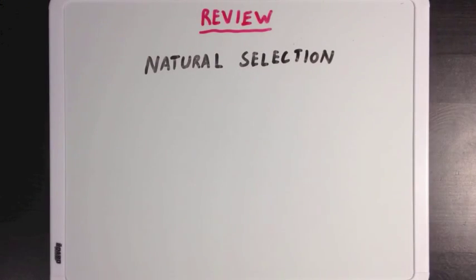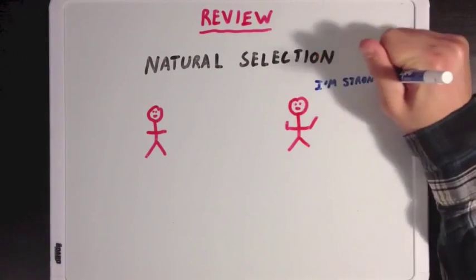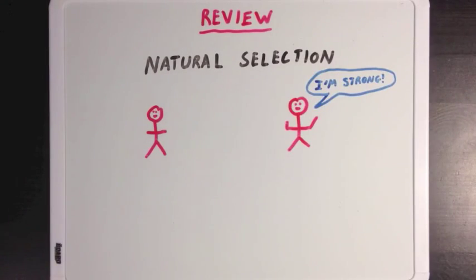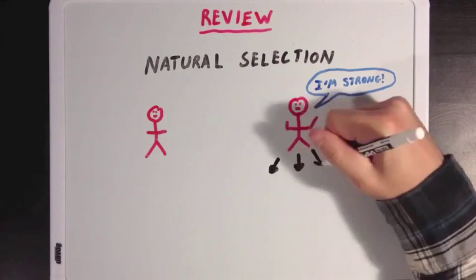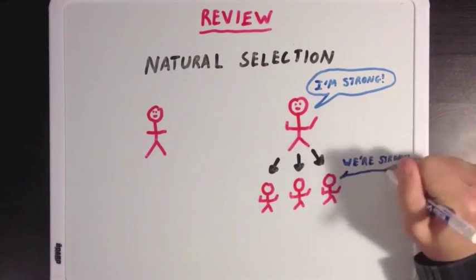And it's the idea that if you have a member of a population that has a special, advantageous genetic trait, then that individual is more likely to live to an age where it can reproduce and pass on that special trait to their offspring.